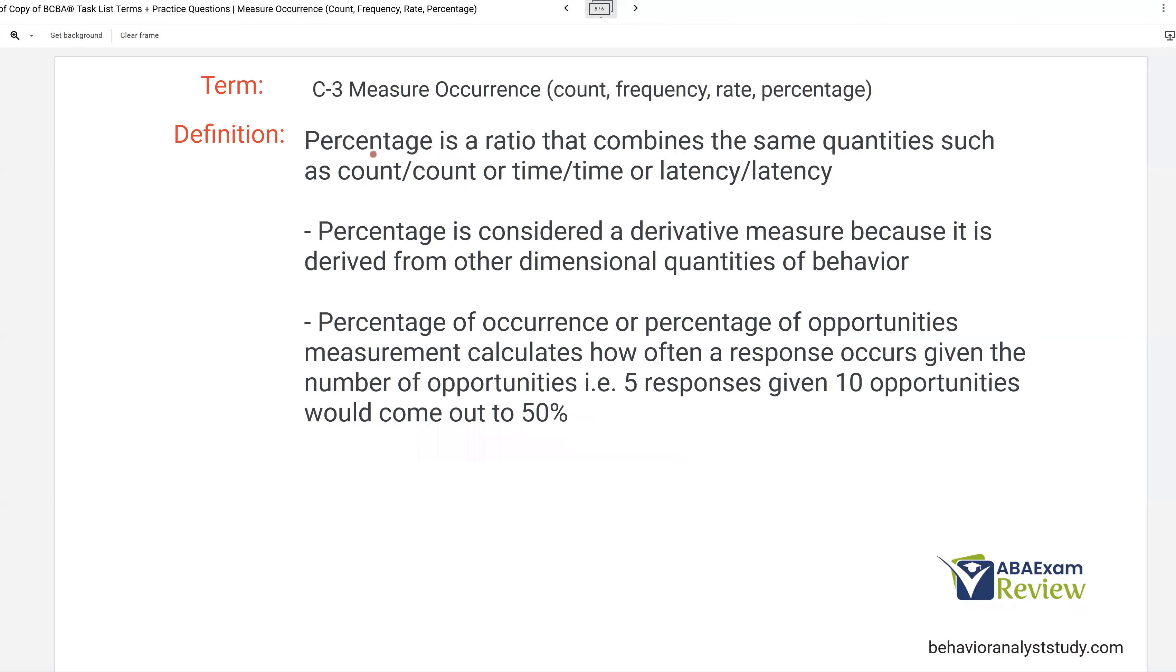And then finally, percentage. If you don't know how to find percentage, you don't know how to find averages, you got to learn. You got to know how to do these things. And a percentage is simply a ratio that combines the same quantities. Count over count. So let's say one over two is 50%. Time over time, five seconds over 10 seconds. That would be, we can make that a percentage. And then latency over latency.